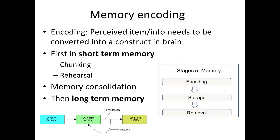Whenever you remember something or think of a memory, you are retrieving a neurobiological memory construct in the brain by accessing the stored piece of information. You can think of it like a library: every book would be a specific memory, and whenever you want to retrieve that memory, you have to go to the library and grab the specific book you want to think about.